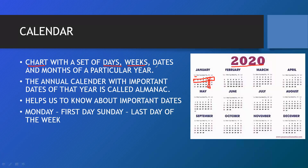Suppose I am telling you today's date is 21st December — that is the date. January, February, June — they are the months. So this chart comprising all these components — days, weeks, dates, and months — is called a calendar. These are the components of the calendar.